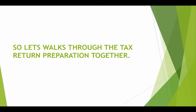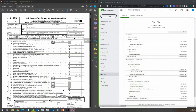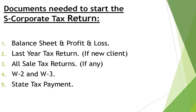Let's walk through a tax return preparation together. Once we collect documents from the client, the three main things to ask for first are: the last year tax return, the current year balance sheet, and the current year profit and loss. The rest we ask for after, because before sending emails asking for things they may not have, we should look into their books first.